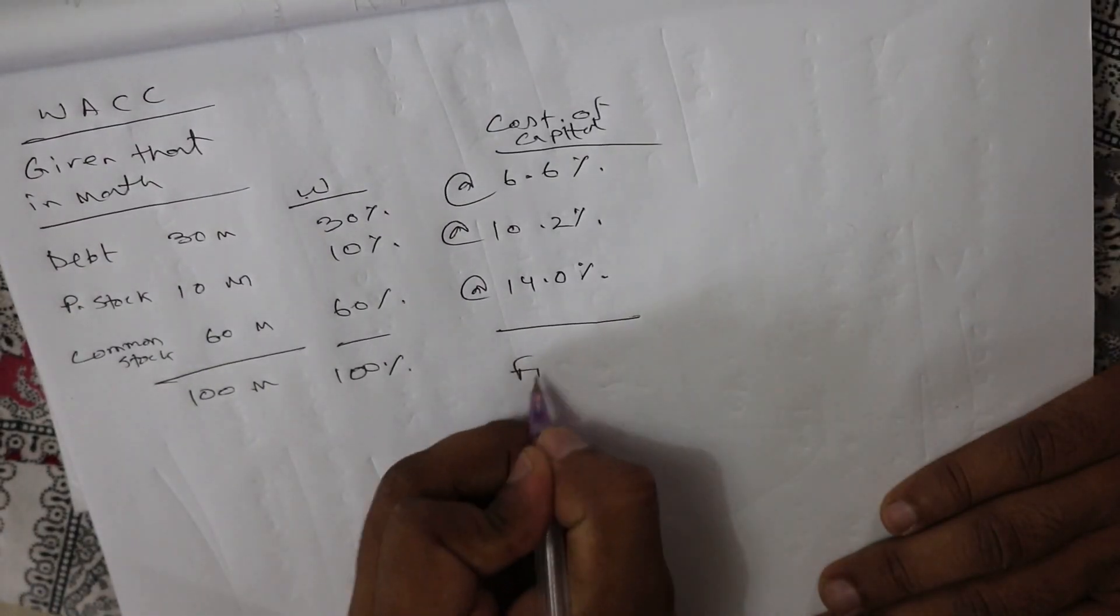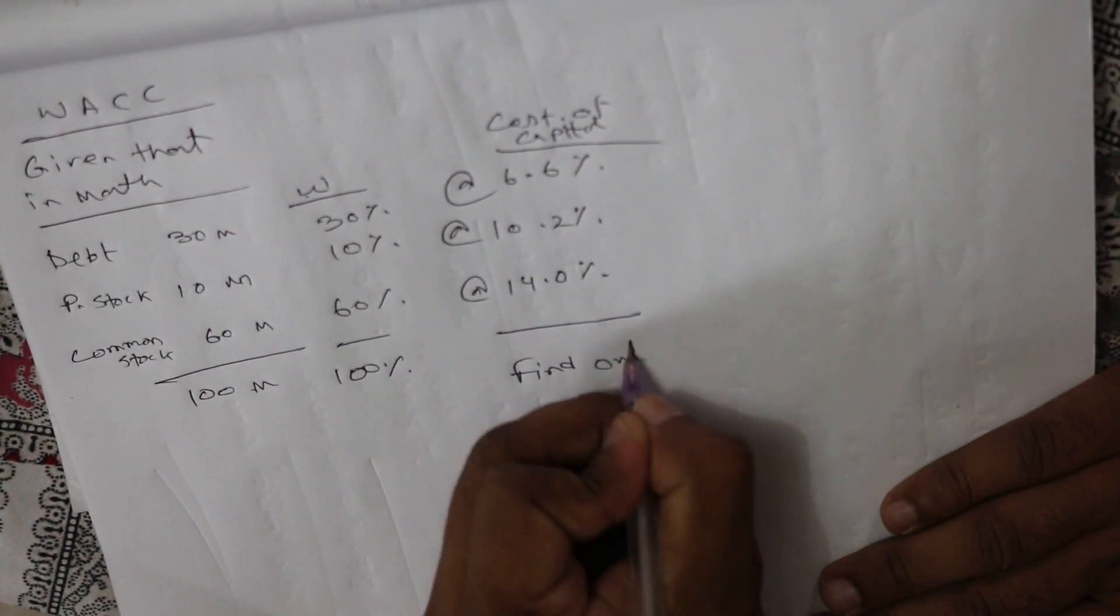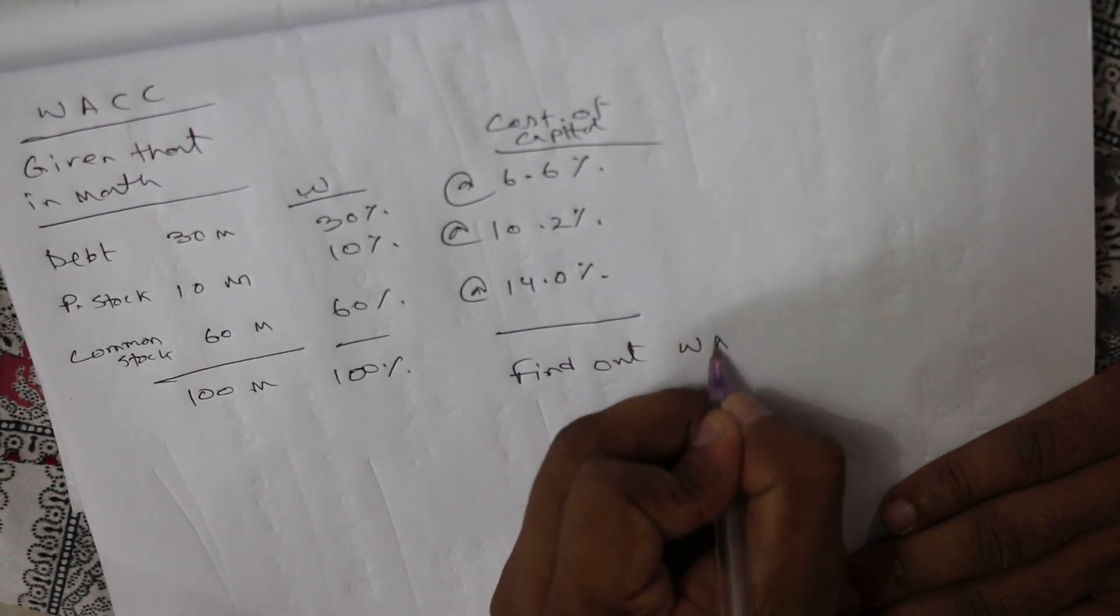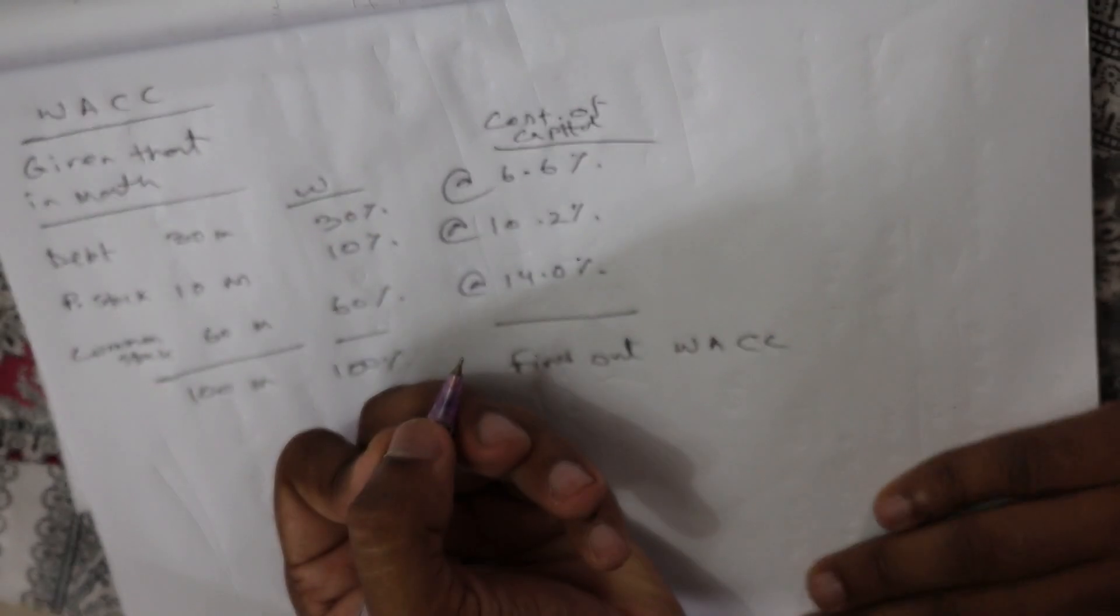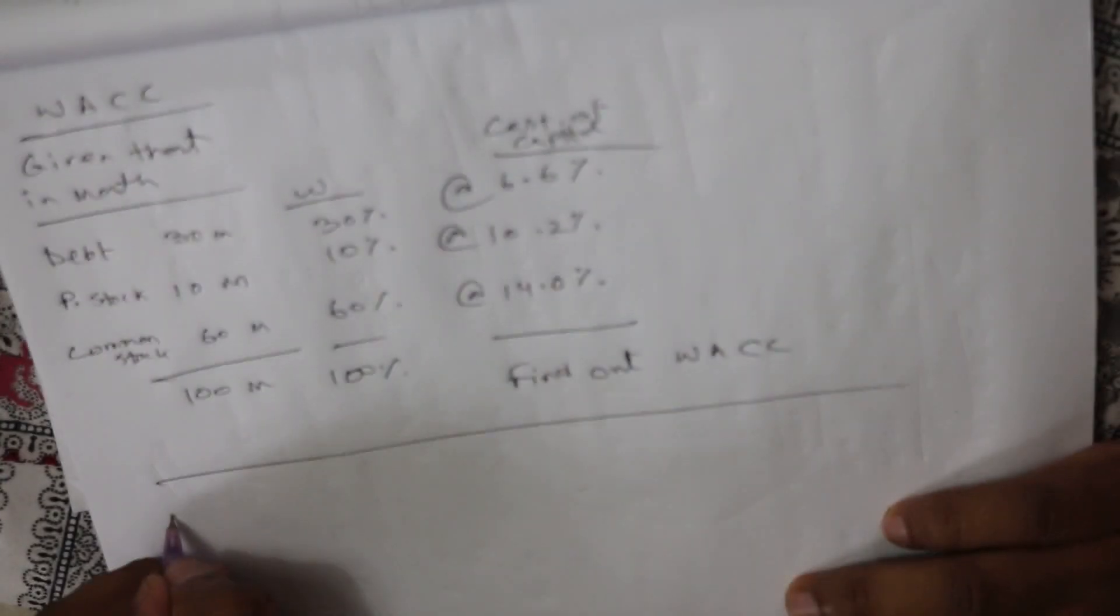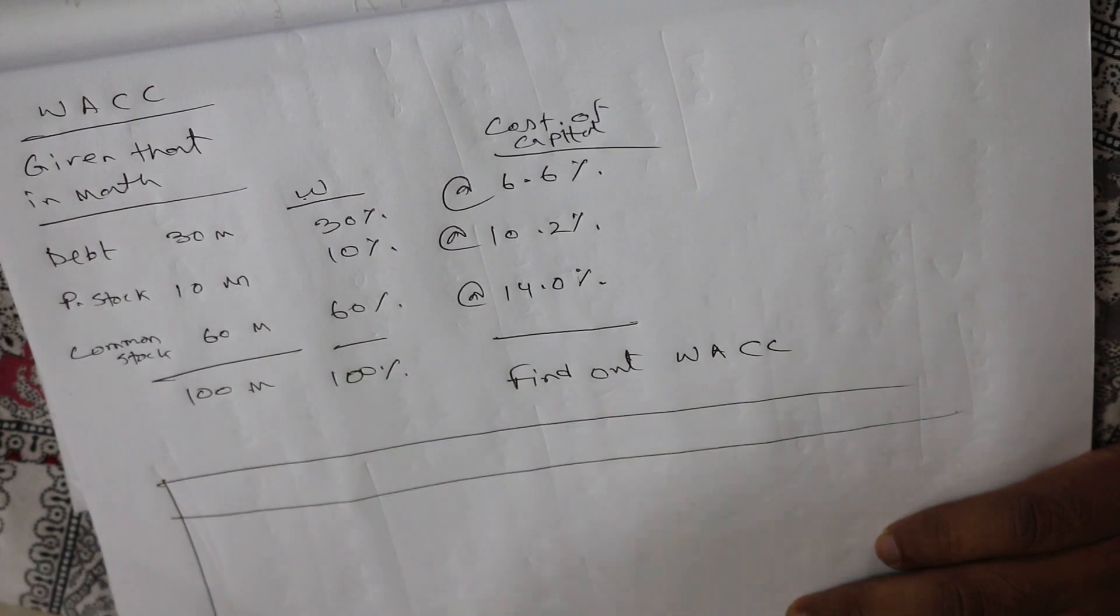We have to find out WACC, weighted average cost of capital. Now, like previous, the formula,